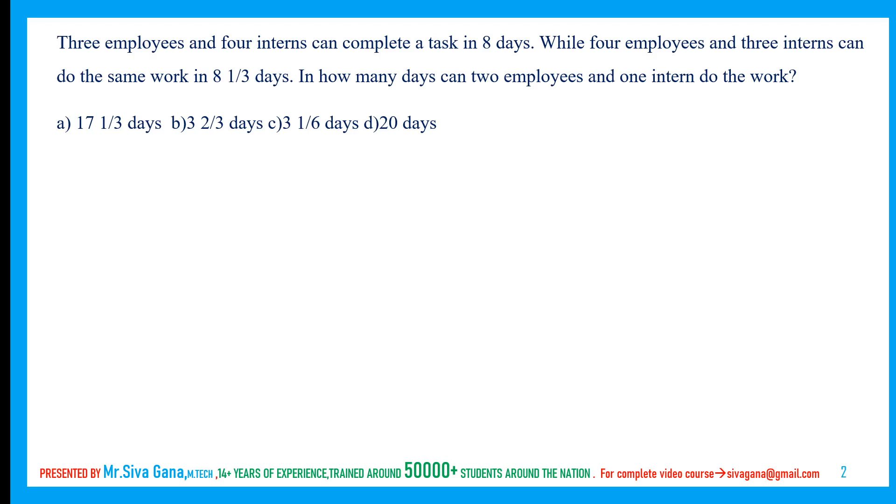Let us see the first question. So 3 employees and 4 interns can complete a task in 8 days. Let us say 3 employees, 4 interns can finish the task in 8 days. Which means 3 into 8, 24 employees plus 4 into 8, 32 interns can finish the task in 1 day. While 4 employees and 3 interns can finish the task in 8 and 1/3, that is 25/3 days.